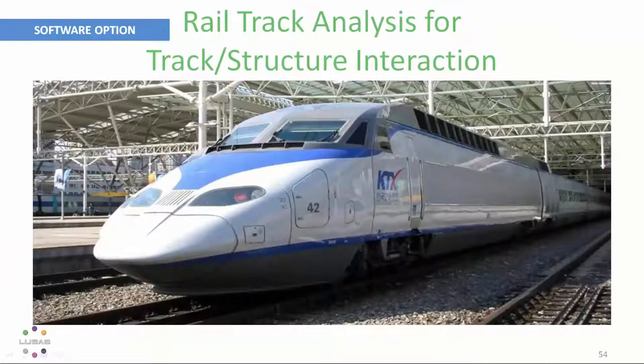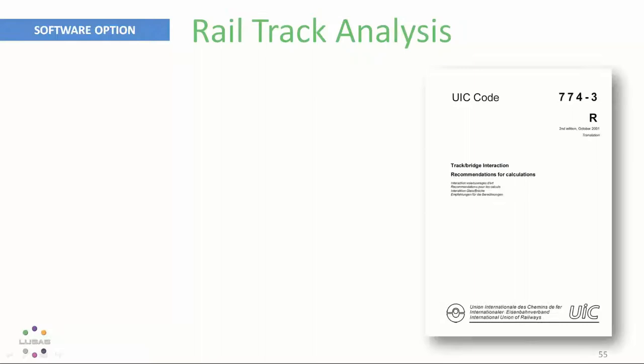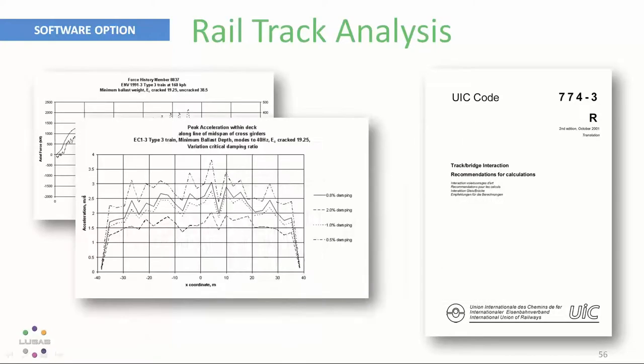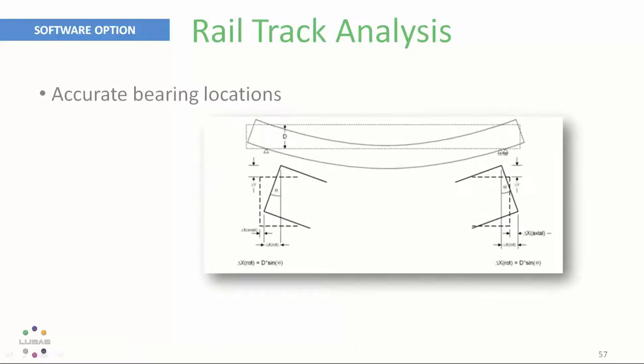Our rail track facilities enable a fast assessment of track structure interaction, according to the Euro code and UIC 774-3, with wizards to automatically create models that have all the necessary non-linear functionality and wizards to obtain all the forces, displacements and accelerations rapidly and conveniently. Improvements in version 19 here now allow the location of bearings in board of the deck ends, leading to more accurate representation of the deck and rail system, and also allow the definition of multiple train loading groups, making the consideration of many train configurations much more efficient.